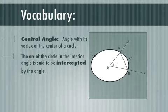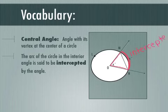What this sentence is saying, the arc of the circle in the interior angle is said to be intercepted by the angle. What that really means is that, see I've got this angle here, the arc, and remember arc is like a piece of the outside of the circle that's kind of sandwiched in between that angle. That's called the intercepted arc. That is an intercepted arc. It's intercepted by the two ends of the angle.